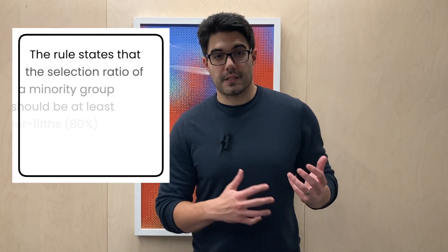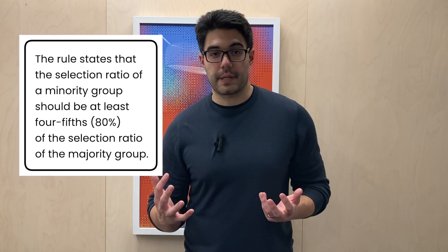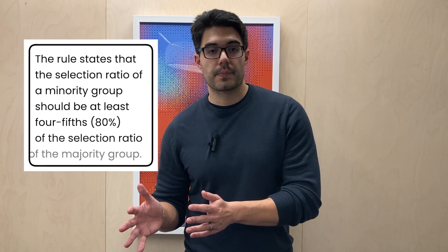The four-fifths rule is an informal heuristic used by diversity practitioners and human resources professionals to diagnose whether discrimination is happening in a selection process. What it requires is that if we have a majority group, the minority groups have to show at least 80% of the selection ratio that the majority group has.